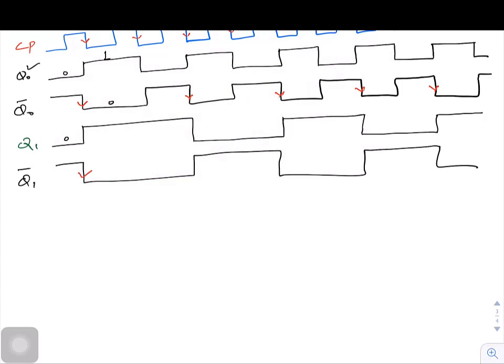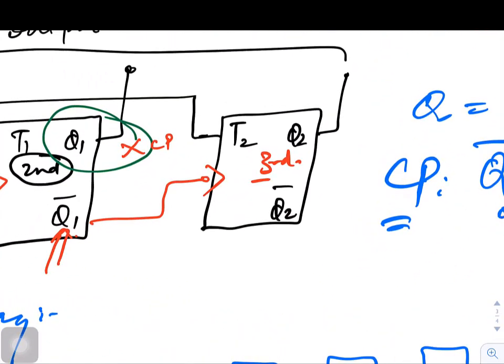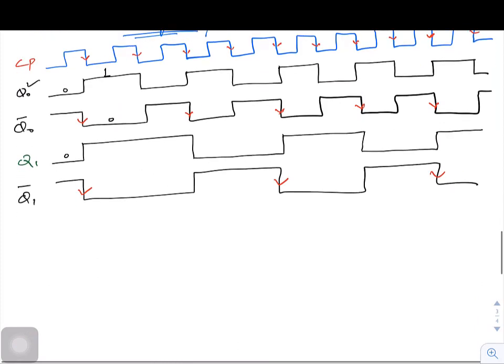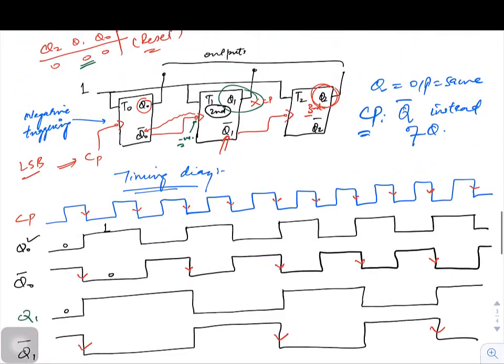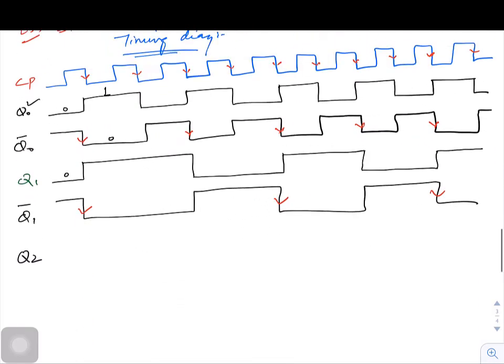Let us note down where we are moving from one to zero. Now this Q1 bar is ready, so we are ready for Q2, the final output. Let us draw Q2. Initial value of Q2 again is zero, so from zero we move to one, from one we move to zero, and that's it. Now finally, if I check